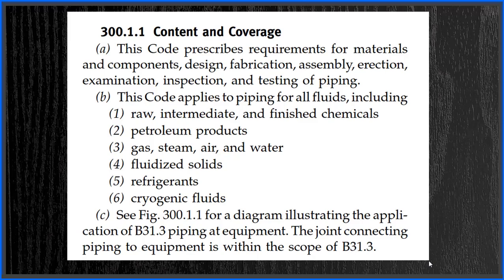These points A, B, and C highlight where you can apply ASME B31.3. Point A says: this code prescribes requirements for materials and components, design, fabrication, assembly, erection, examination, inspection, and testing of piping. It lists out all the requirements that the piping has to go through — from engineering to construction, from A to Z — which are covered in this standard.